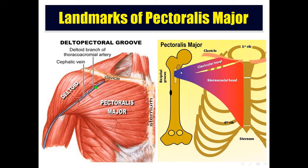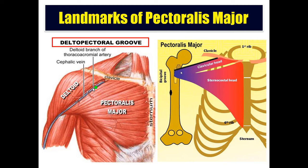This is the pectoralis major muscle. The clavicular head arises from the clavicle; the sternocostal head arises from the sternum and costal cartilages. It is inserted into the lateral lip of the bicipital groove. It is supplied by the medial pectoral and lateral pectoral nerves. The action is adduction, flexion, and medial rotation of the arm. Regarding landmarks, it has an upper border and a lower border. The upper border is separated from the deltoid by the delto-pectoral groove, which contains three structures: the deltoid branch of the thoracoacromial artery, the cephalic vein, and infraclavicular lymph nodes.